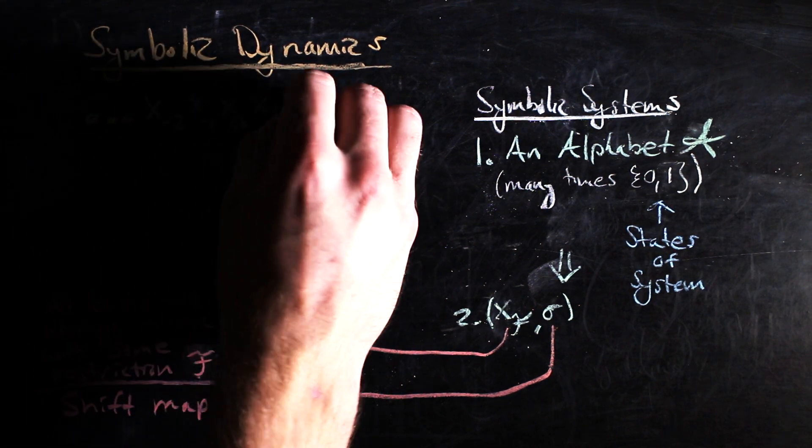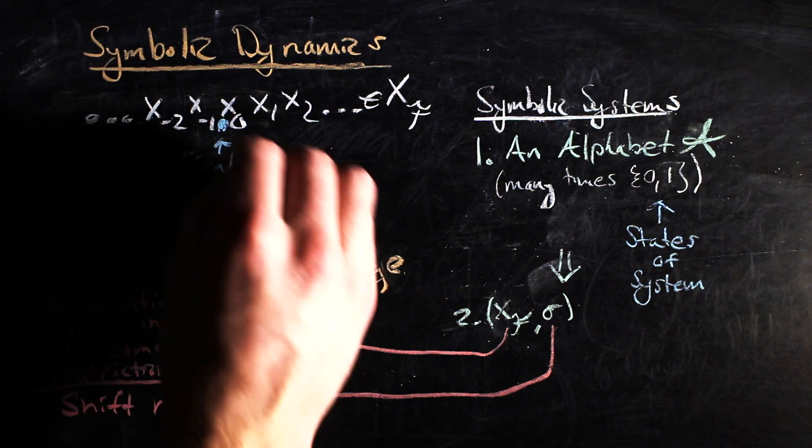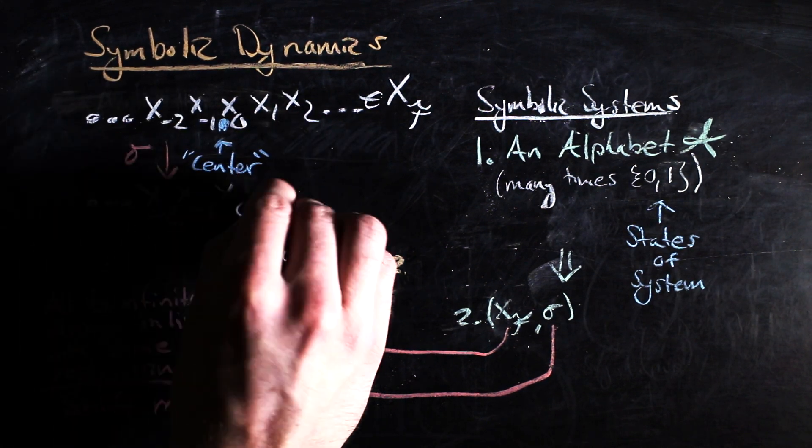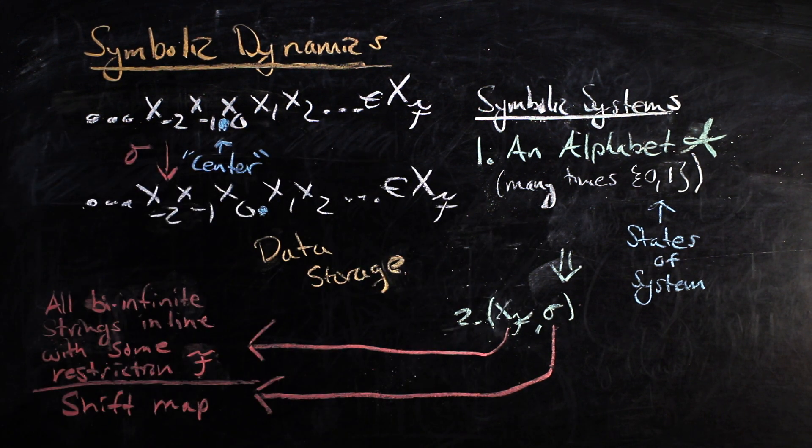You can think of each of these bi-infinite strings as having a pointer at the center in some sense, and then the shift map takes one of these bi-infinite strings and shifts the center over by one symbol. For this reason, these spaces are called shift spaces.